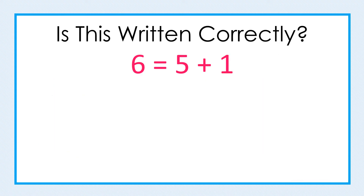When students were asked if an equation like this is written correctly, they often answered no. This is because students believe the answer must come last. However, this equation is indeed written correctly. Here, the equal sign represents a relationship between the 6 and the 5 plus 1. It shows that the 6 is the same amount as the 5 plus 1.